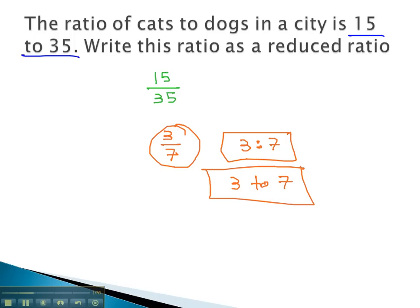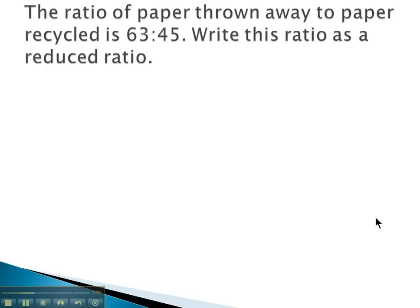Let's take a look at one more example. Here, we're told that the ratio of paper thrown away to paper recycled is 63 to 45. We want to write this as a reduced ratio. We'll change that 63 to 45 to a fraction, 63 over 45.